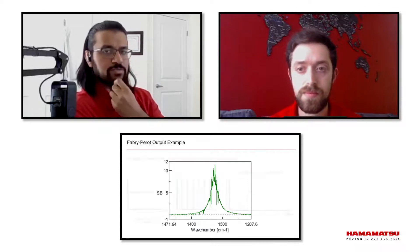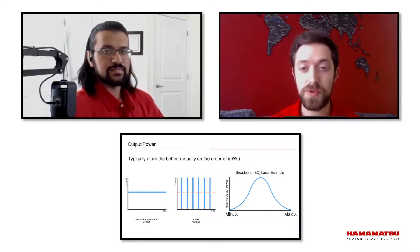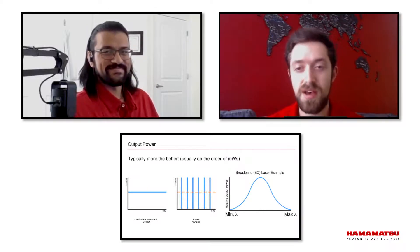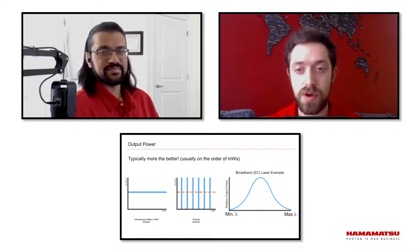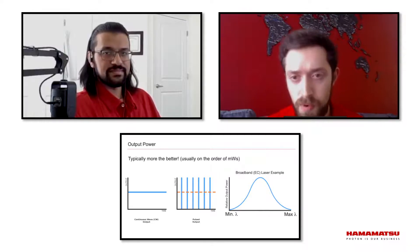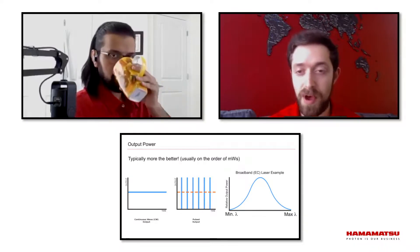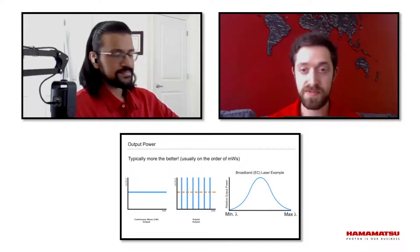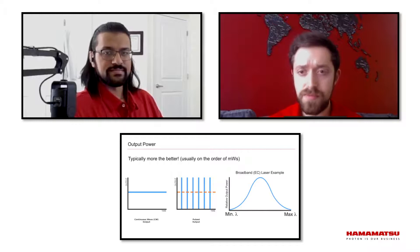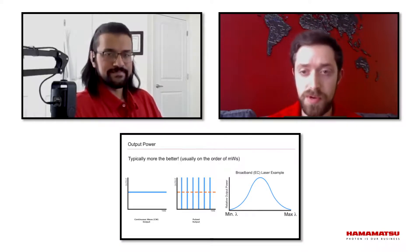What should we look out for when comparing these different types? There is a huge list of general specifications for QC lasers. First and foremost, output power — different lasers are going to have different output powers, and you need to know what level of sensitivity you need for your application. When it comes to broadband lasers, the output power might differ across its wavelength region, so it's very important to know.